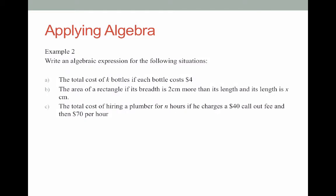Here are our examples. We have three of them. We're going to work out A the total cost of K bottles if each bottle costs $4. B the area of a rectangle if its breadth is two centimeters more than its length and its length is x centimeters. And we're also going to work out the total cost of hiring a plumber for n hours if he charges $40 call out fee and then $70 per hour. So let's start off with A the total cost of K bottles if each bottle costs $4.